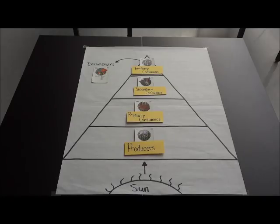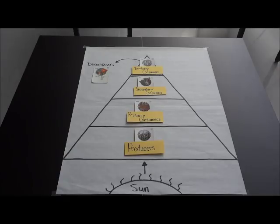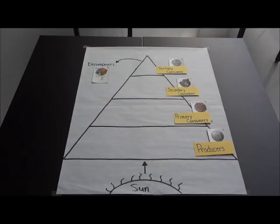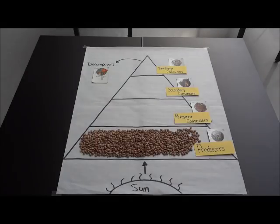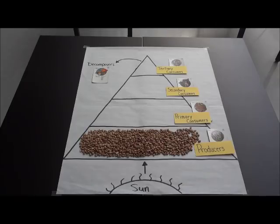Now we can go ahead and begin the energy activity. For this activity, we're going to use pinto beans to represent energy. To make calculations easier, we are going to use 1,000 pinto beans. I moved the labels and each picture of our organisms off to the side so that we would have more room to work with the beans. I have added 1,000 pinto beans to our producer level, the bottom level of our energy pyramid, to help us show how energy is transferred from one level to the next. Remember, the pinto beans represent energy.